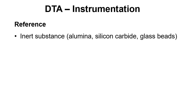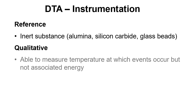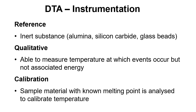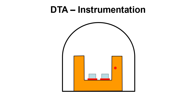In terms of instrumentation, the inert reference can be alumina, silicon carbide, or glass beads. DTA is qualitative, so we are able to measure the temperature at which events occur but not the associated energy. For calibration, a sample material with a well-known melting point is analysed so that we can calibrate the temperature scale for the instrument.